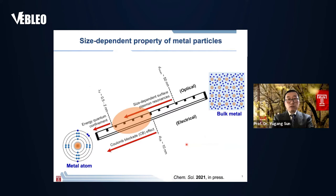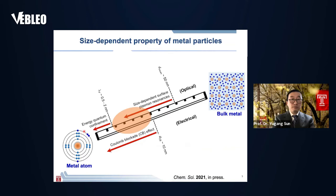Why do we need small particle size? When we reduce the particle size to a certain level, it can benefit both hot electron generation and hot electron injection. In an atom, all the electrons are confined in well-defined energy levels. Even the valence band electrons have to stay in specific energy levels.